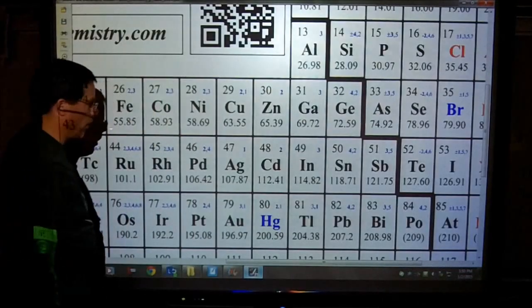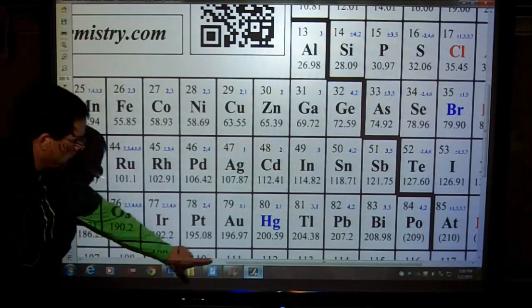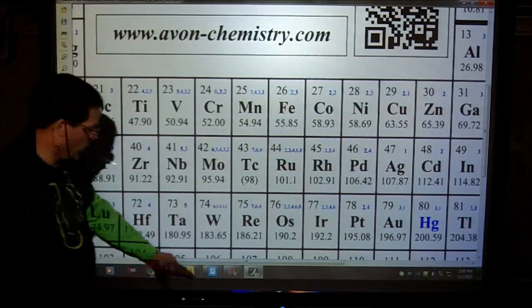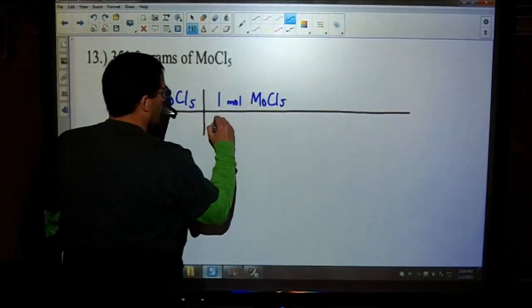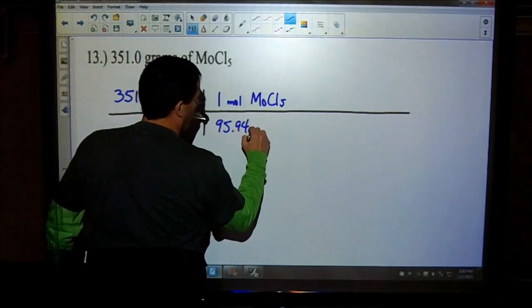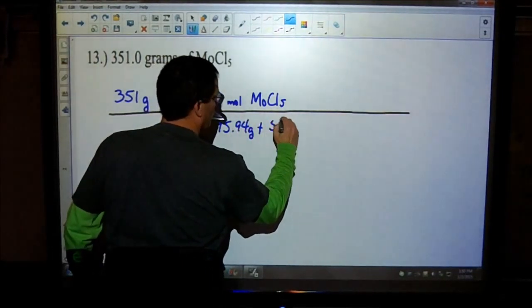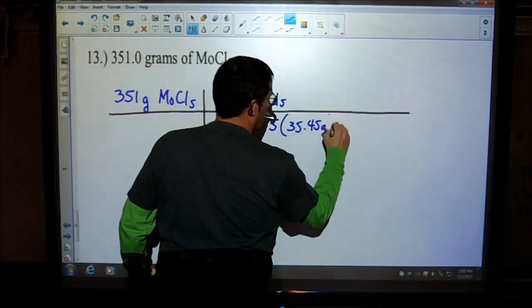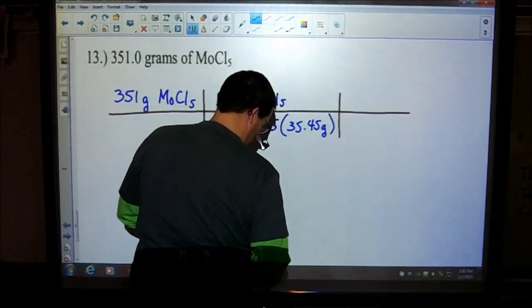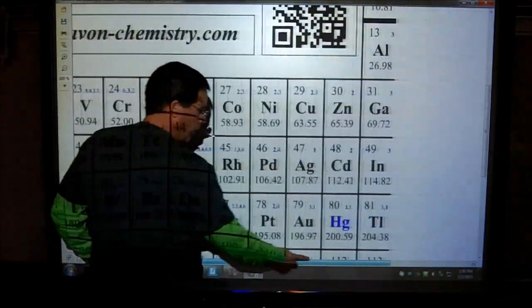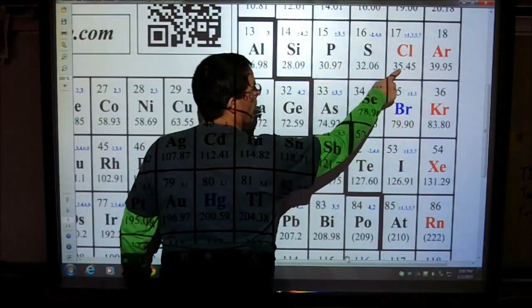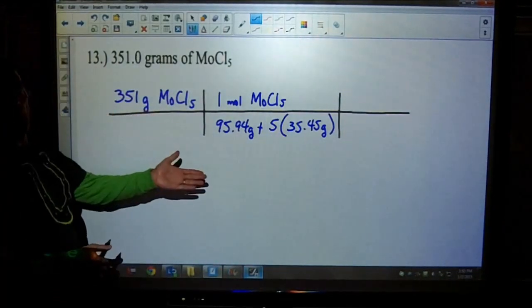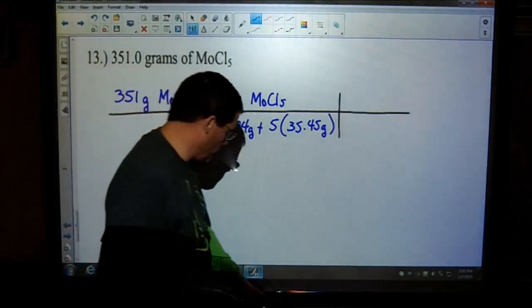Grams are going to go down. One mole of MOCl5. Molybdenum is not one that I use very often. 95.94, and we have one of those, 95.94 grams. Plus, we have five chlorines, which is 35.45 grams. How did I get that? I'm looking at the periodic table. Chlorine, 35.45. If I stop right there, that gives me my moles. But that's not what the question is asking for.